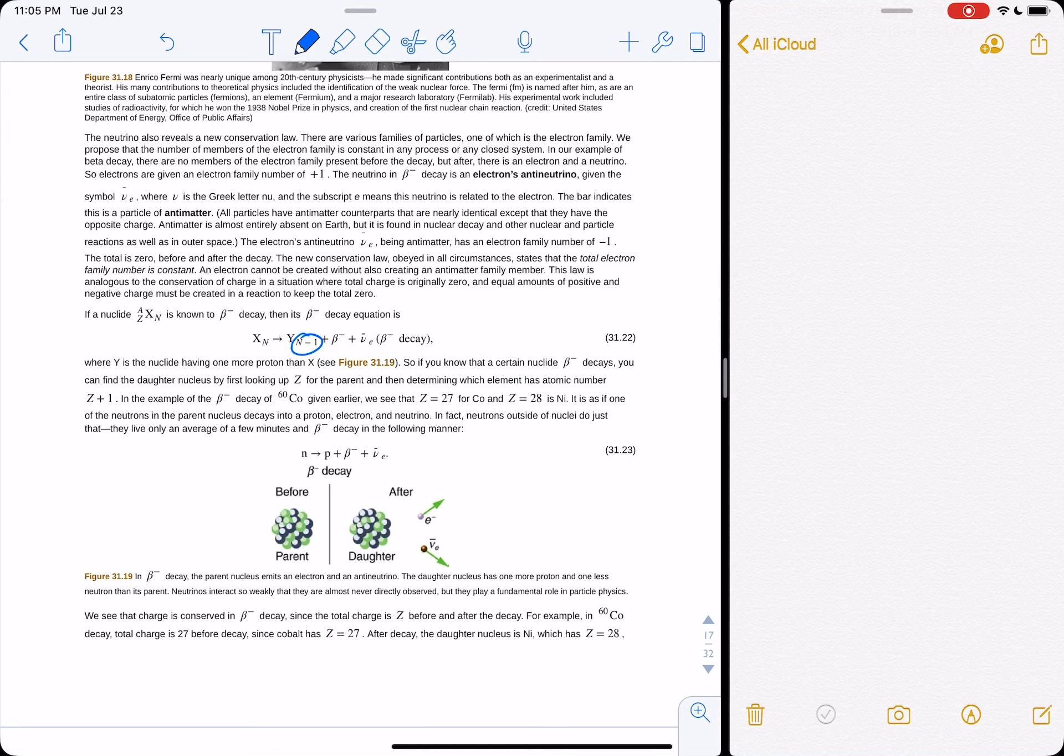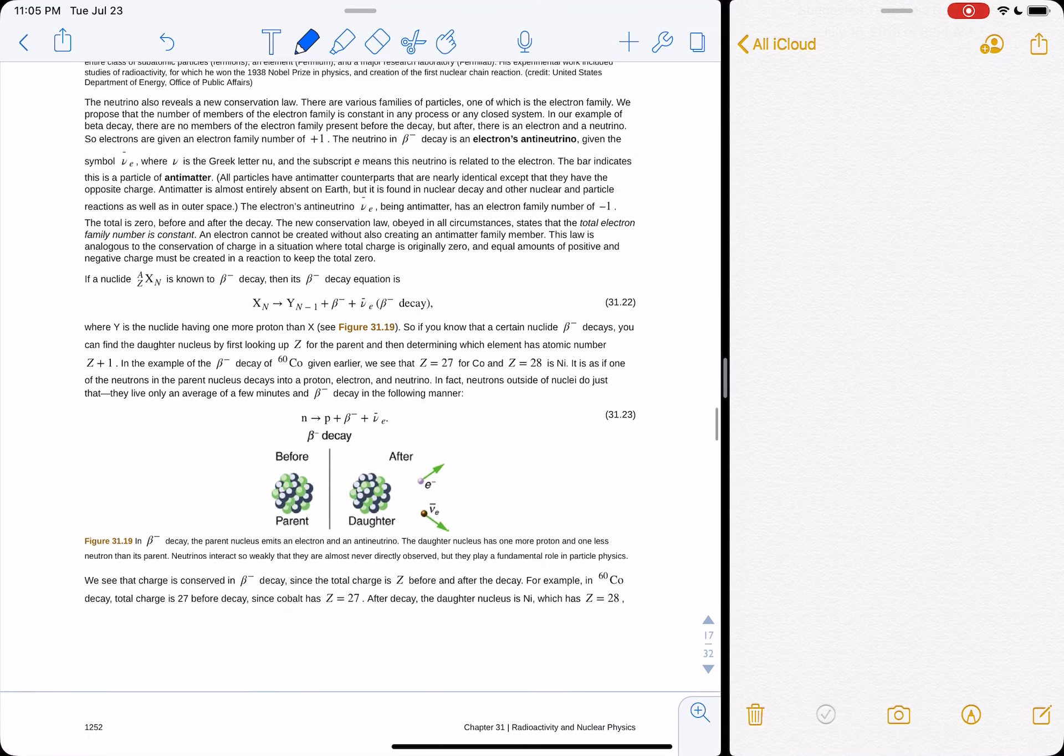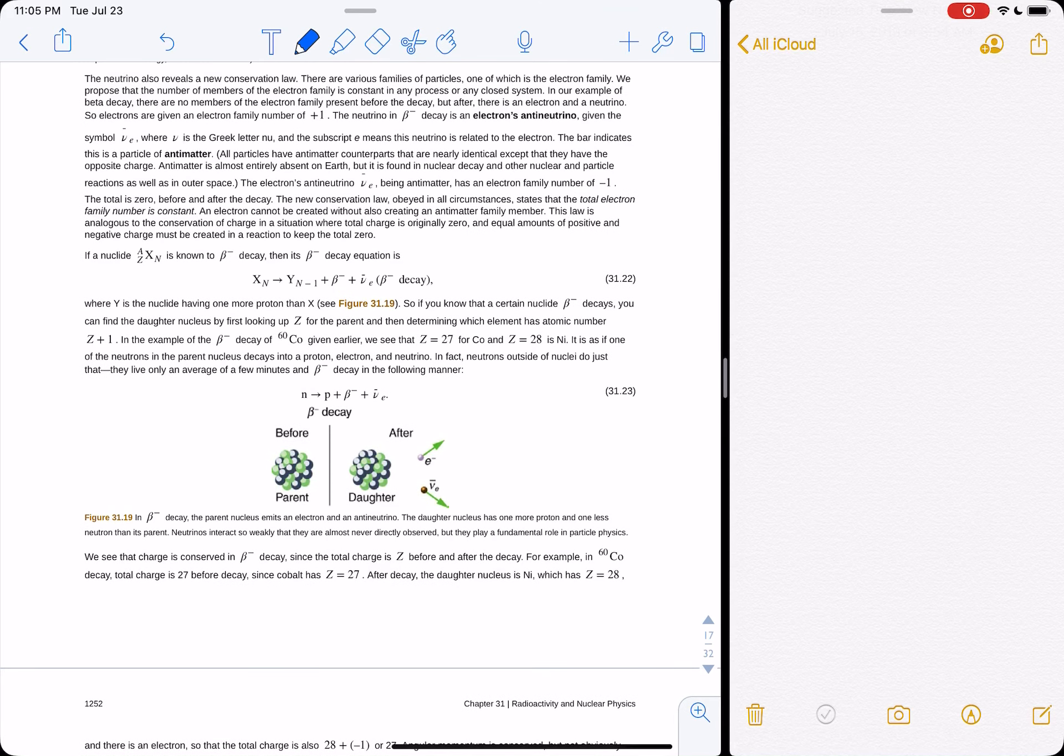And then, so z is gonna become plus one, n is gonna be minus one, and then we end up turning up one of the things into another thing. So in this, we've turned, if you go cross-eyed there and compare these two parent and daughter nuclei, you can see it turned one of the green things into a blue thing and then emitted a electron and electron neutrino. So we took a neutron, we turned it into a proton, and we emitted an electron and an electron neutrino.